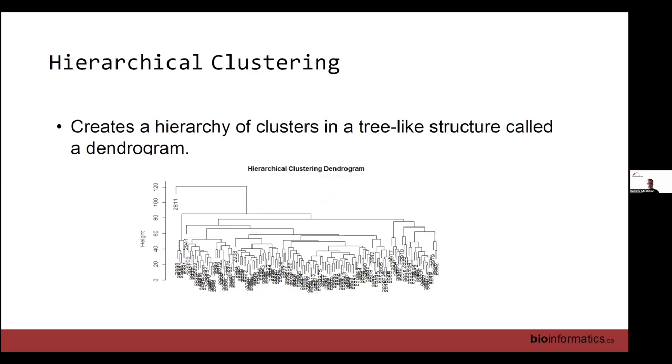The next method is hierarchical clustering. Hierarchical clustering creates a tree-like structure called a dendrogram, and these are really useful because they help you identify visually how the model is actually clustering things together. This is an example of a dendrogram I've made in the past. You can create dendrograms in two ways: you can start at the bottom up where each individual observation is its own cluster.